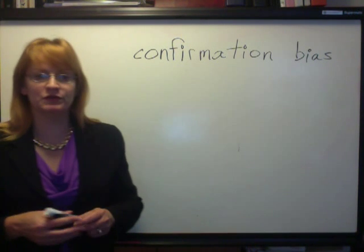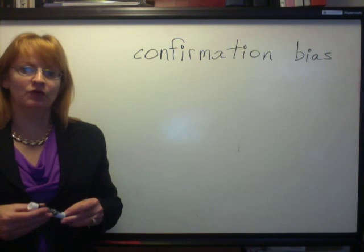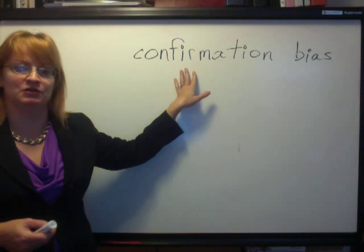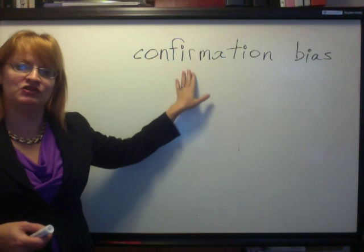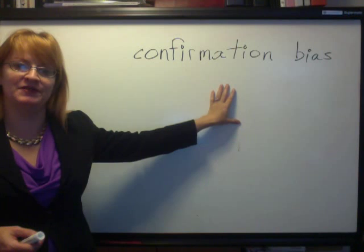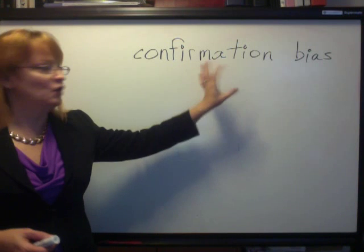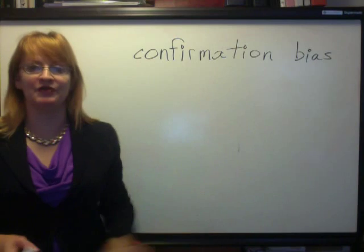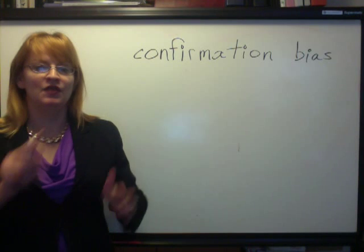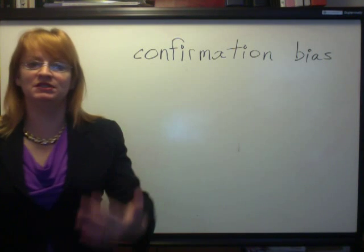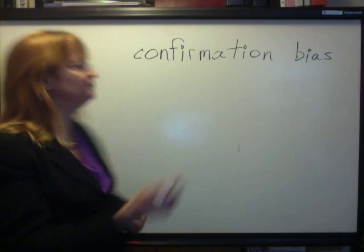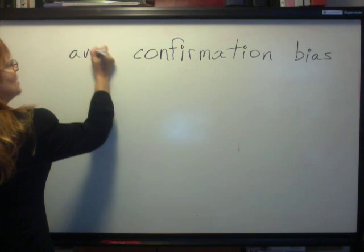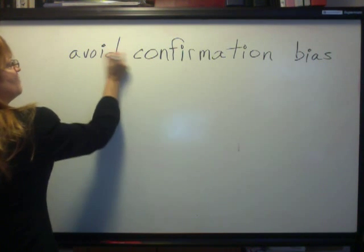In psychological research, great pains are taken to avoid confirmation bias. Confirmation bias is when someone has a hypothesis and they only look for evidence that would support their hypothesis. They don't look for evidence that would disprove it. So in psychological research, we want to avoid confirmation bias.